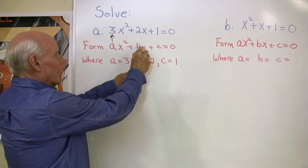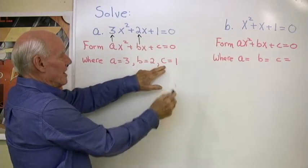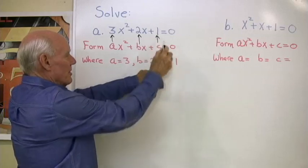B, the coefficient of x, must be 2. And C, the constant term, must be 1.